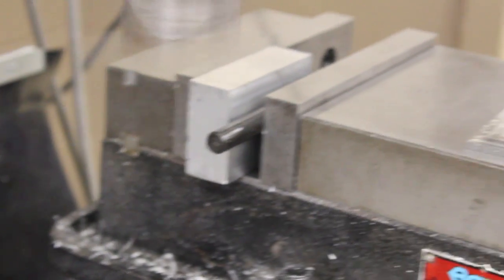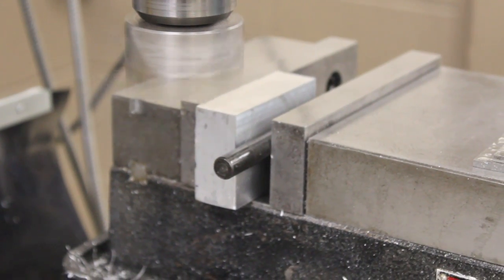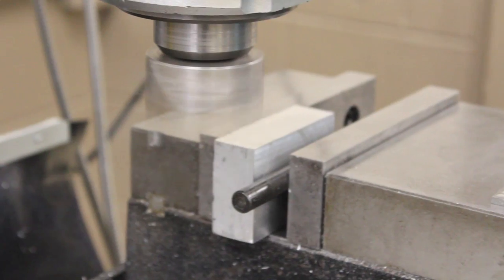Take the machined face from the previous operation and flip it away from you and place the machined face against the fixed jaw.